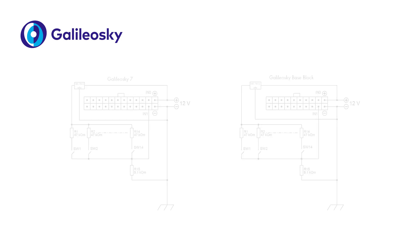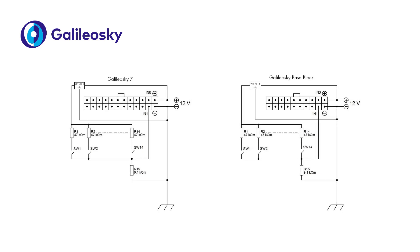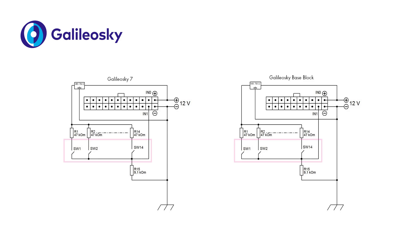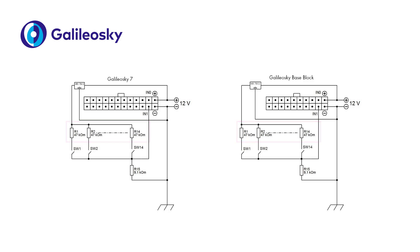Let's take a closer look at the connection scheme. On the schemes shown, the switches of the mentioned sensors SW1 to SW14 are connected via resistors R1 to R14. When a sensor is active, the voltage value measured on the tracker's input changes correspondingly. This changed voltage can be interpreted as the number of active sensors in one chain. R15 is the additional load resistor.